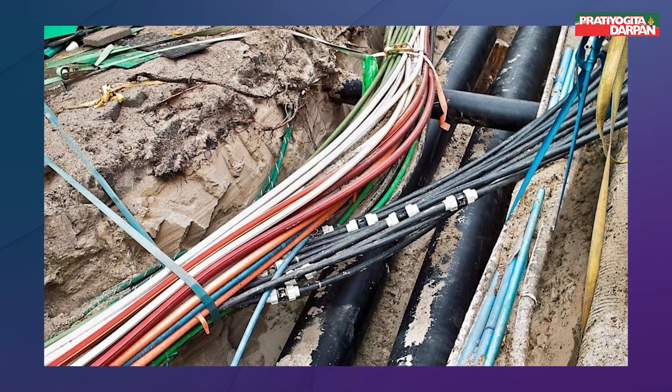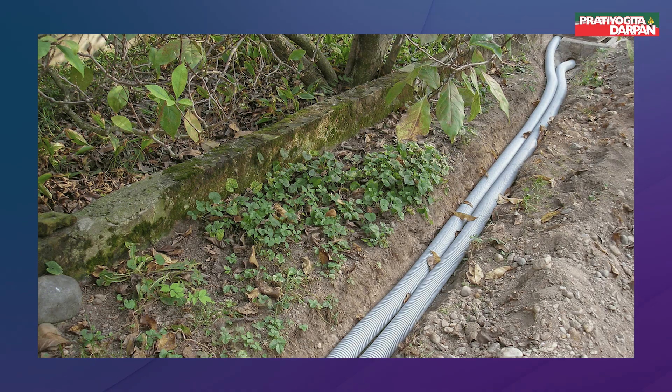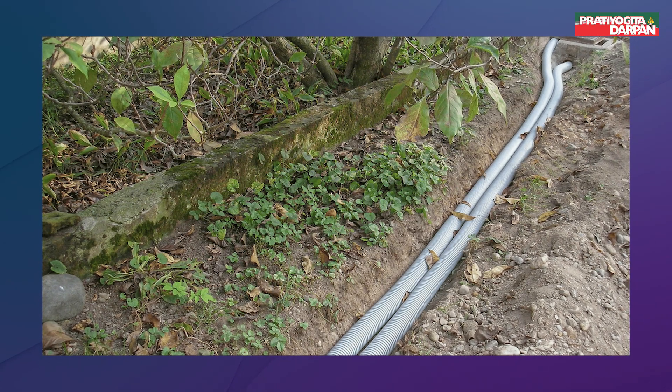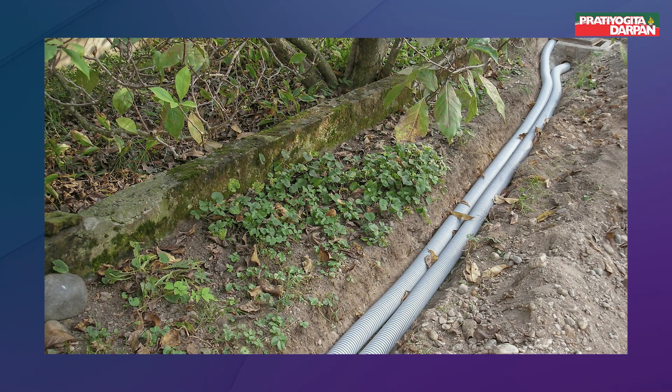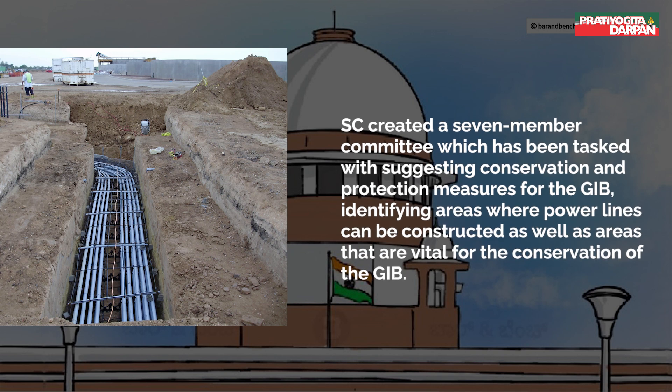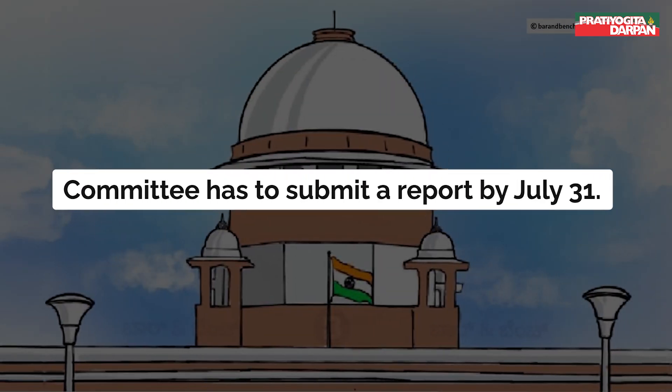On March 21, the SC lifted the blanket restriction against constructing underground power lines. Thus, SC created a seven-member committee tasked with suggesting conservation and protection measures for the GIB, identifying areas where power lines can be constructed, as well as areas vital for GIB conservation. The committee has to submit a report by July 31.